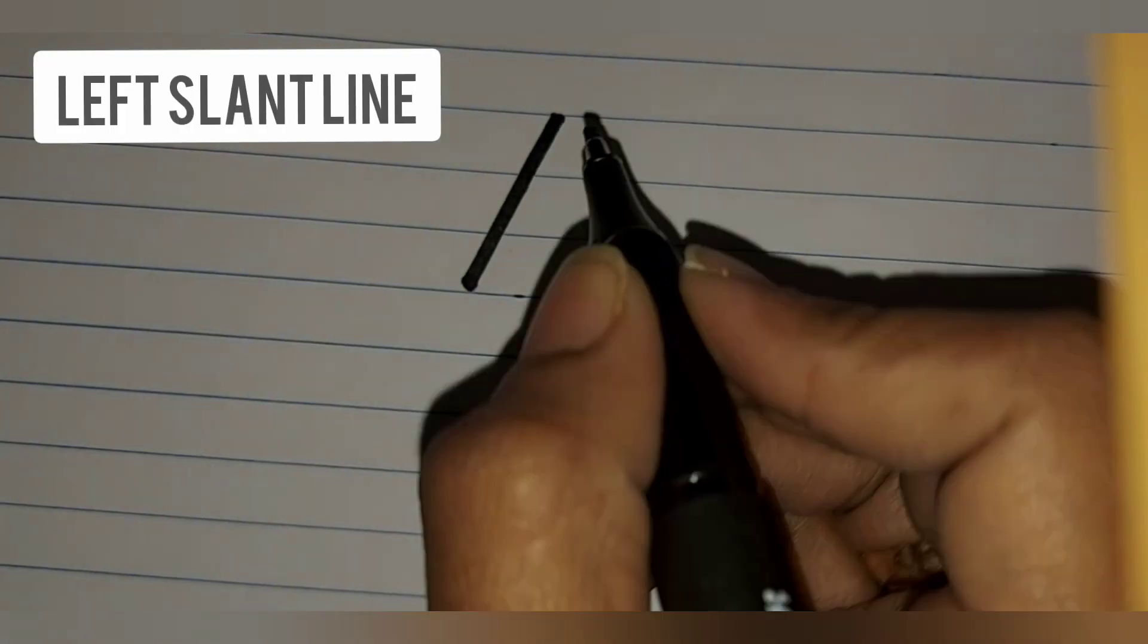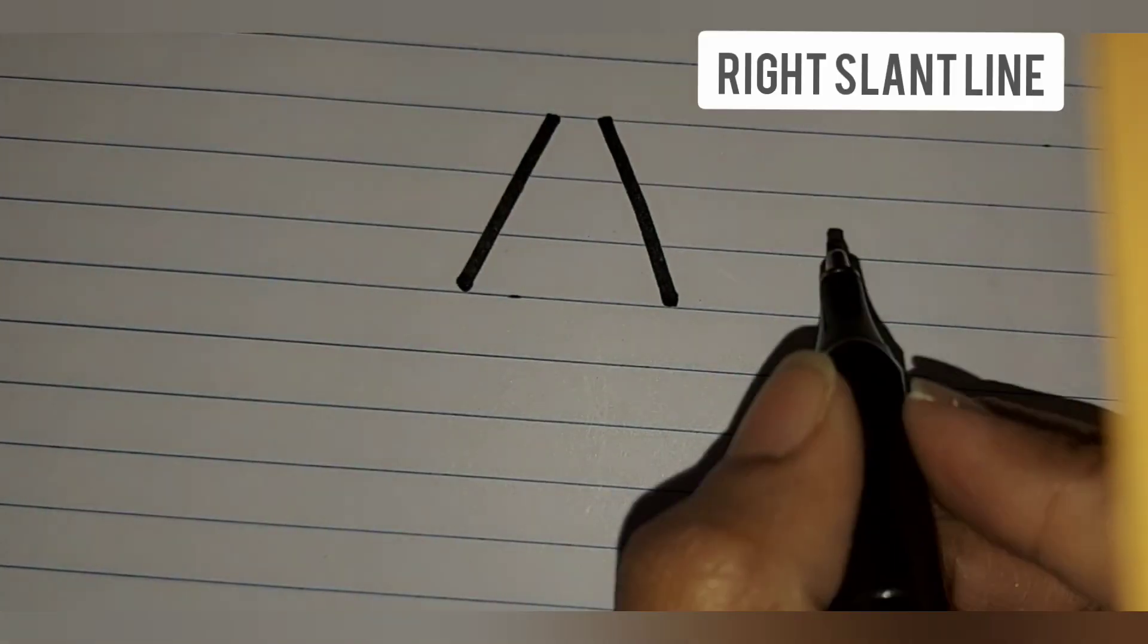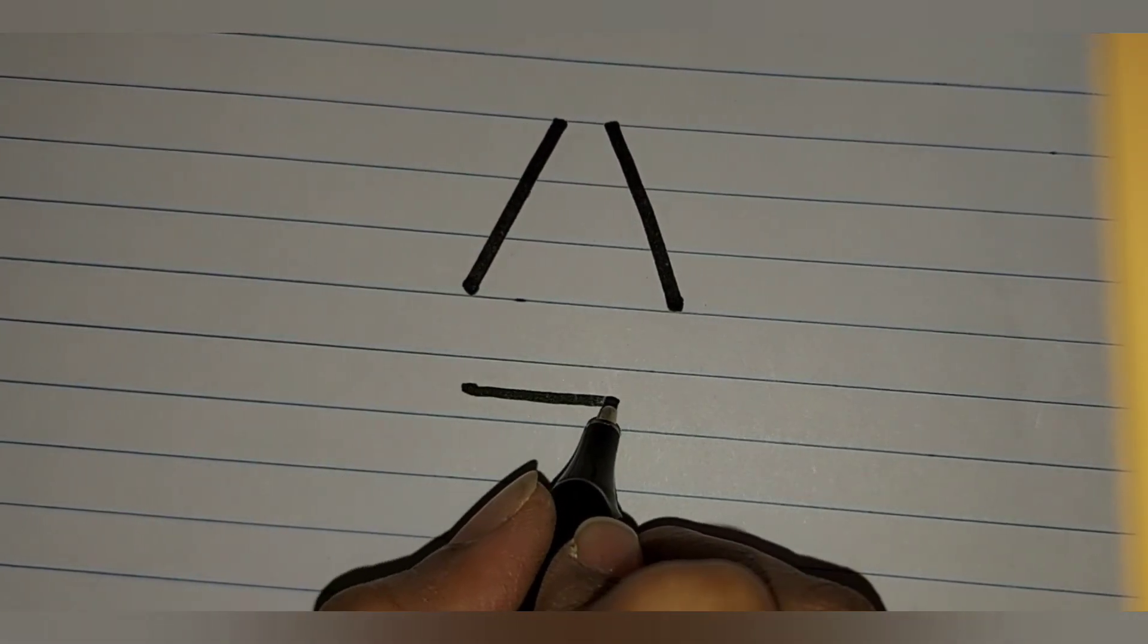To write the uppercase letter A, practice left slanting line and the right slanting line and a sleeping line stroke.